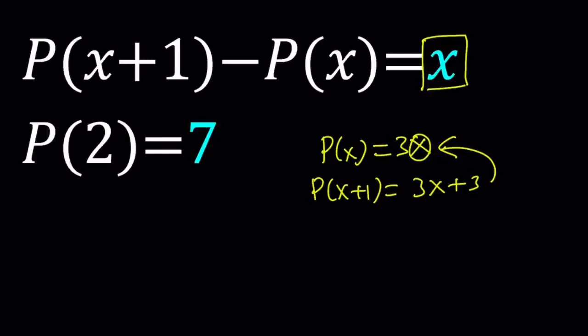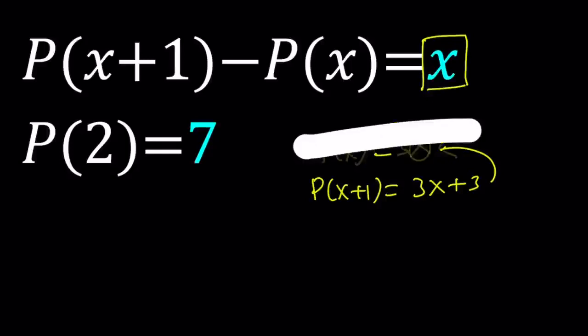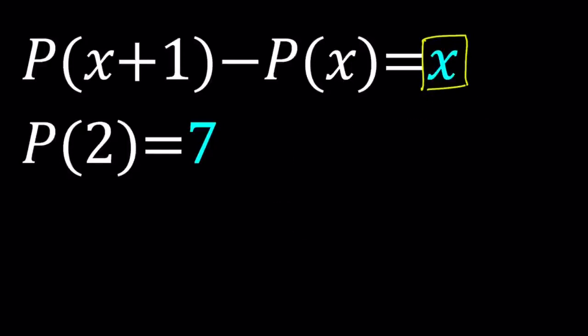So if P of X is quadratic, why does that matter, right? Well, let's just go ahead and plug in some values. So first method. The first method basically deals with substitution a lot, right? And substitution is fun, isn't it?